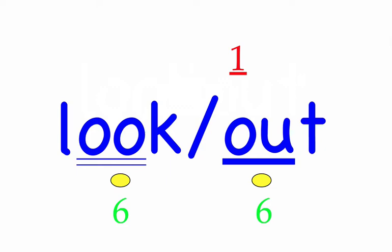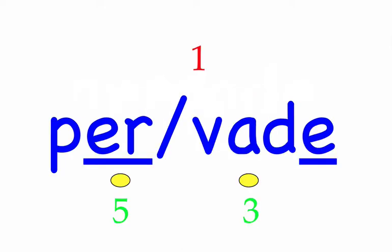Pervade. A very strange smell did pervade the room. First syllable: per, two sounds, P-ur. Second syllable: vade, three sounds, V-A-D. Pervade — mark the word.